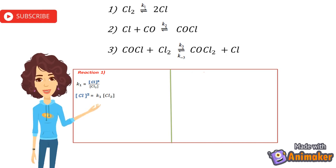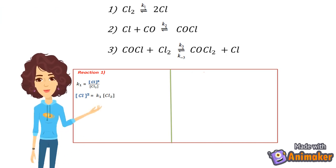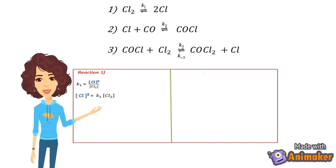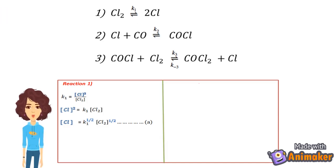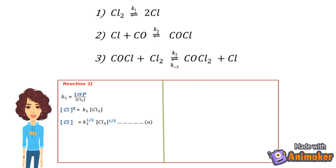Now rearranging and writing the equation: concentration of Cl is equal to K1 times concentration of Cl2. In the next step, the square root is taken and the equation becomes concentration of Cl equals K1 raised to the half times concentration of Cl2 raised to the half. This is labeled as equation A.